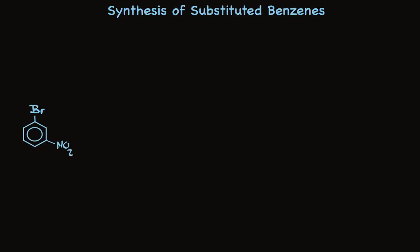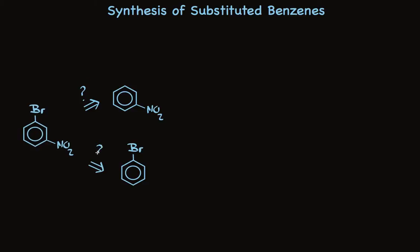Suppose we need to synthesize meta-bromonitrobenzene from benzene. We need to write down the structures of the precursors we could use to make this target in one step. This is easy to do if we do this systematically. First, let's write down the structure that's missing the bromine, and I'm going to write a question mark here because we're asking if this is possible. And here's a second possible precursor — we're wondering if this would work. Let's look at these one at a time.